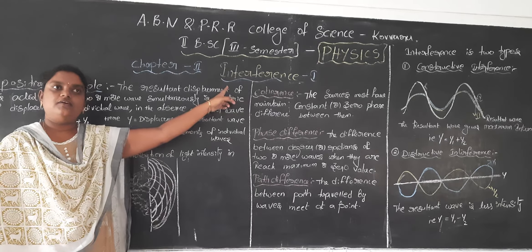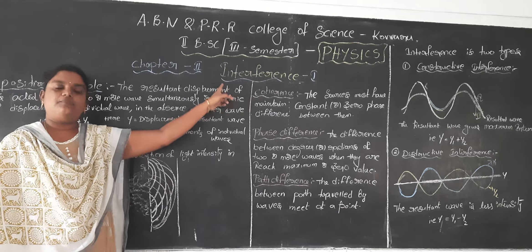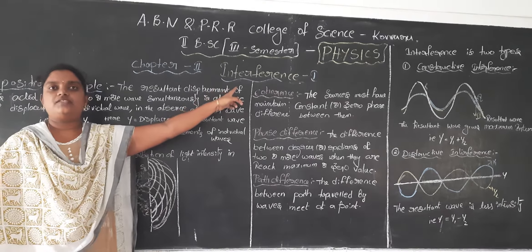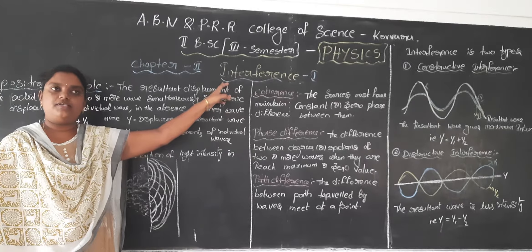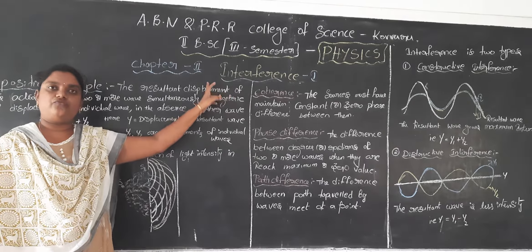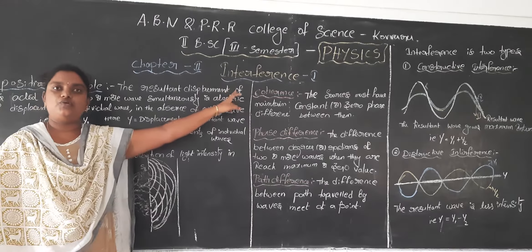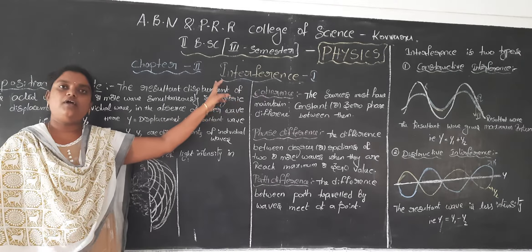So Interference. Each chapter is divided — number 1 is based on wavefront, and number 2 is based on amplitude.